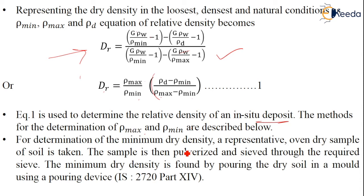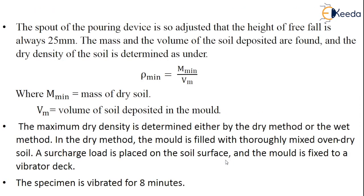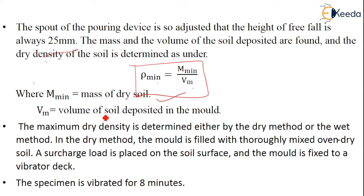For the determination of minimum dry density, a representative oven-dry sample is used. The sample is pulverized and sieved, and the minimum dry density is found by pouring the dry soil into a mold using a pouring device according to IS 2720 Part 14. The spout is adjusted so the height of free fall is always 25 mm. The mass and volume of the soil deposit are found, and ρmin = Mmin / Vm, where Mmin is the mass of dry soil and Vm is the volume of soil deposited in the mold.